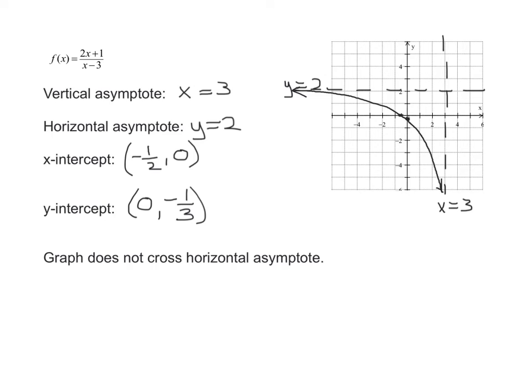I have two possibilities for the graph to the right of x equals 3. It could start down here and go up here and approach my horizontal asymptote, or it could start up here and approach it from this direction. And we really have enough information to determine which one is true.